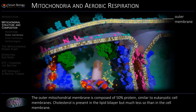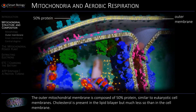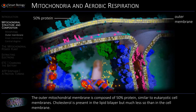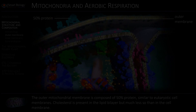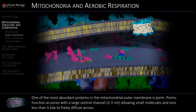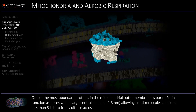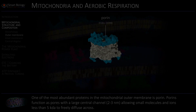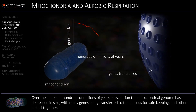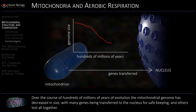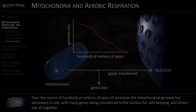The outer mitochondrial membrane is composed of 50% protein, similar to eukaryotic cell membranes. One of the most abundant proteins in the mitochondrial outer membrane is porin, with many genes being transferred to the nucleus for safe keeping, and others lost altogether.